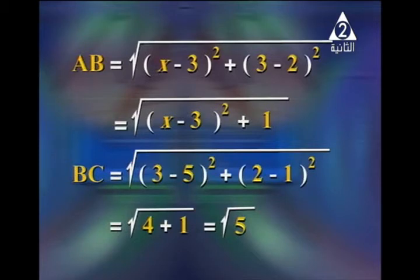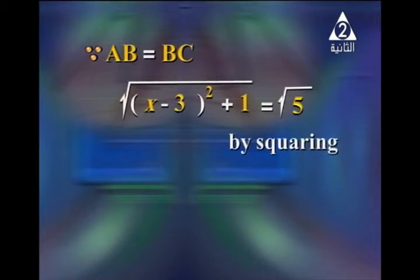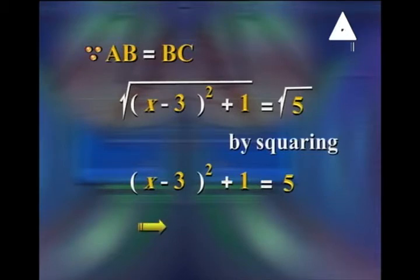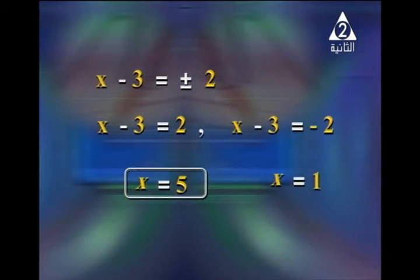Since AB equals BC, we have square root of (x minus 3) squared plus 1 equals square root 5. Squaring both sides gives (x minus 3) squared plus 1 equals 5, so (x minus 3) squared equals 4. Taking square root gives x minus 3 equals positive or negative 2, so x equals 5 or x equals 1.